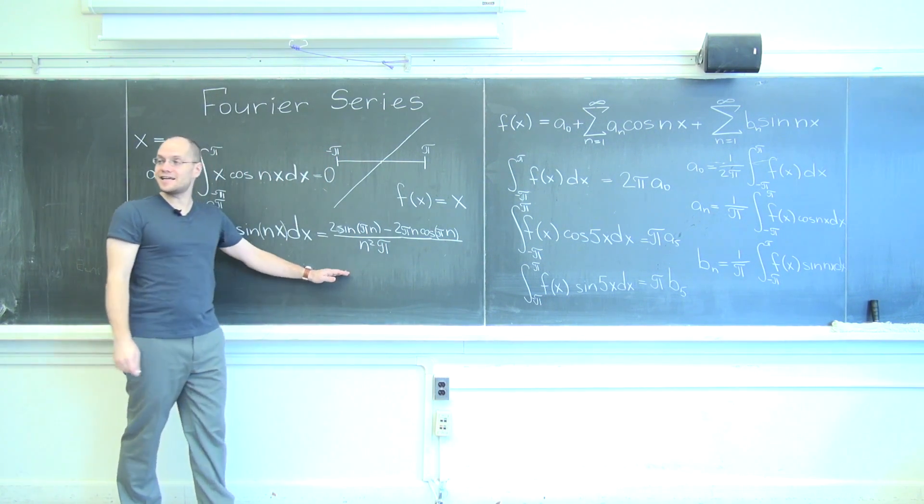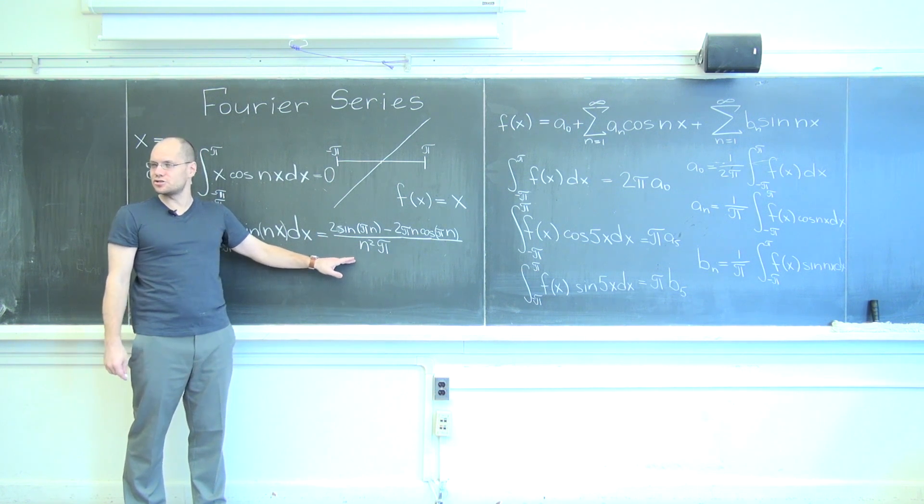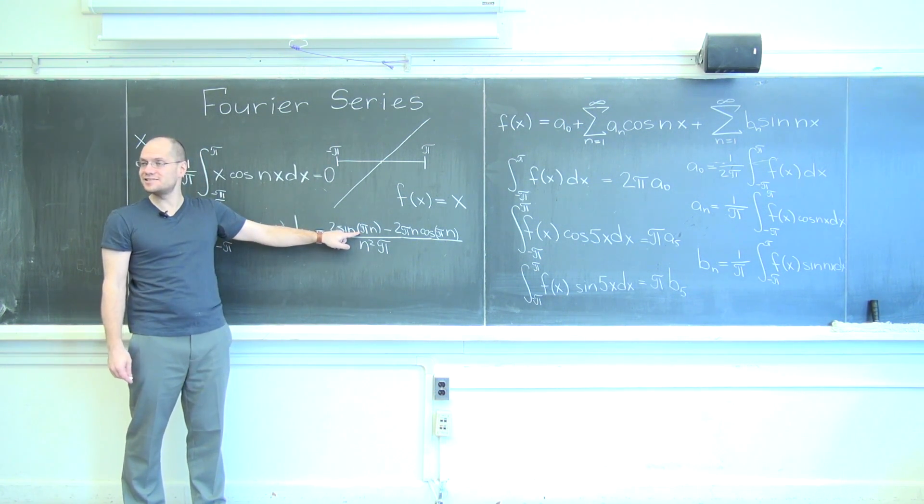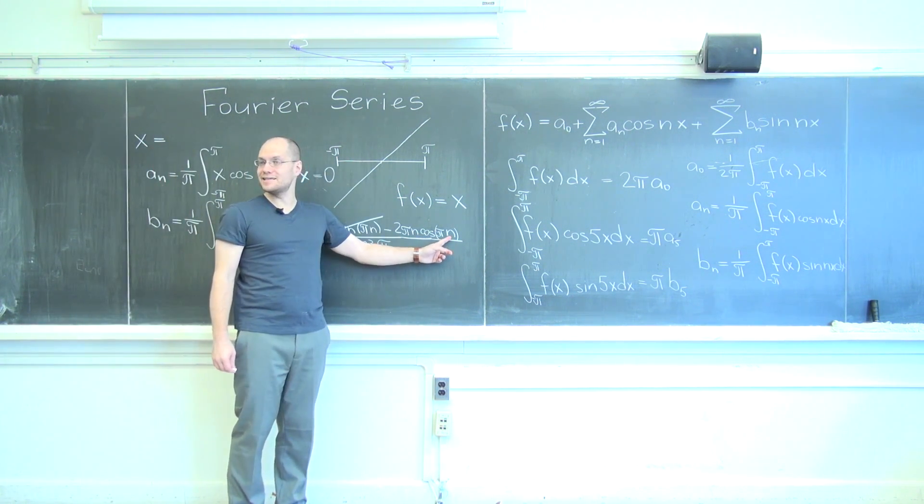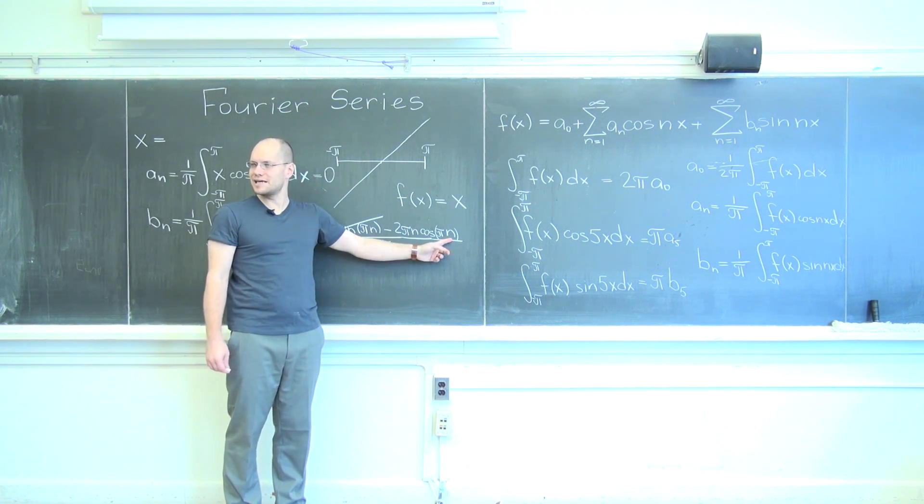Now what Wolfram Alpha did not know, even though you could tell it, is that n is an integer. And because n is an integer, this is zero. And cosine pi n, let's think about it. I think we can write a simpler symbol in its place.